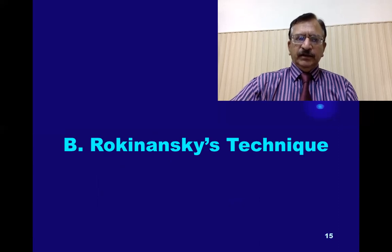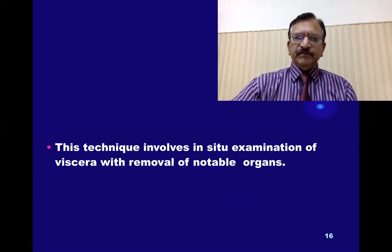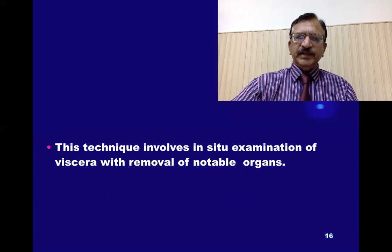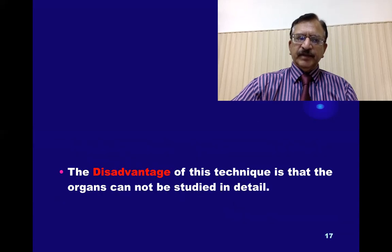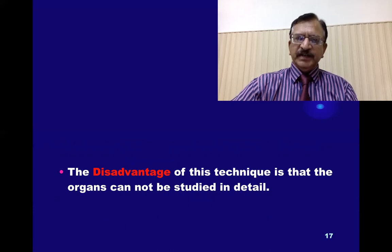Then the Rokitansky's technique. This technique involves in-situ examination of the viscera, with removal of the notable organs only. This technique is commonly preferred when the pathologists want to limit the spread of infection in some infectious cases like HIV or Hepatitis B. The disadvantage of this technique is that the organs cannot be studied in detail.